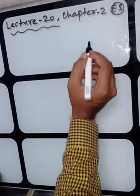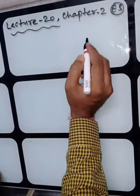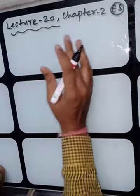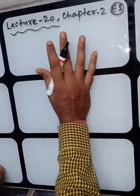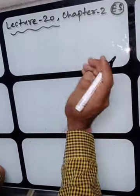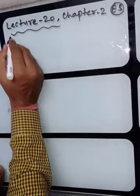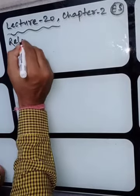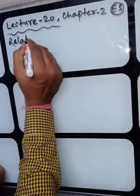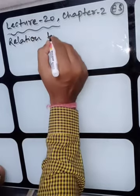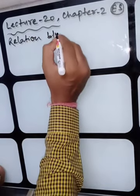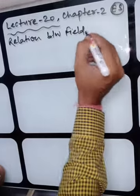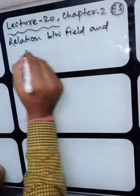Today in this lecture, we will start with the relation between electric field and potential. It is the mathematical relation between field and potential.